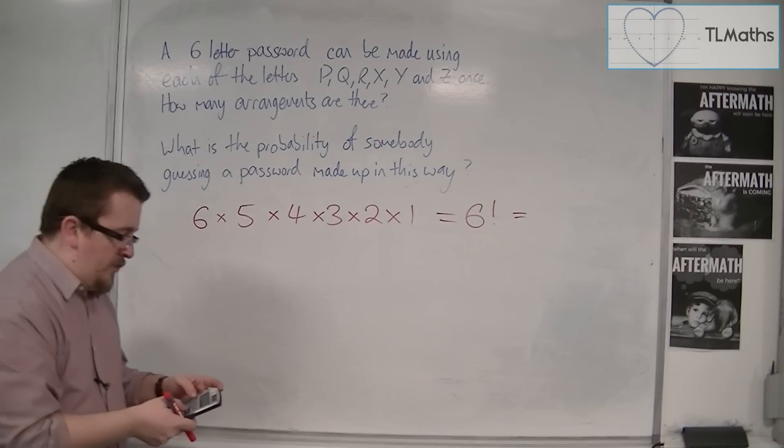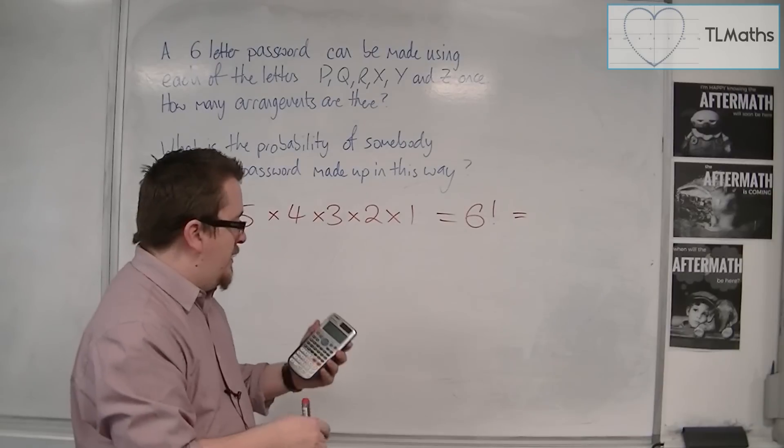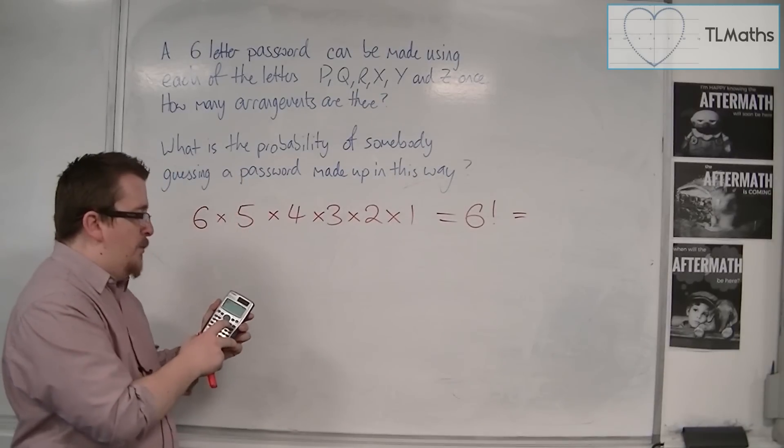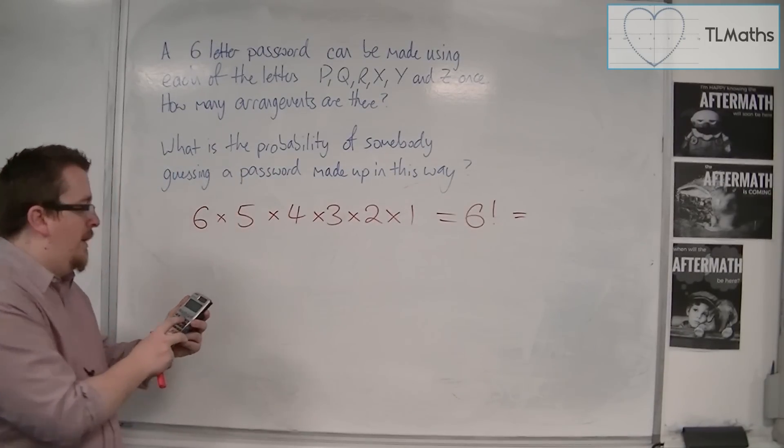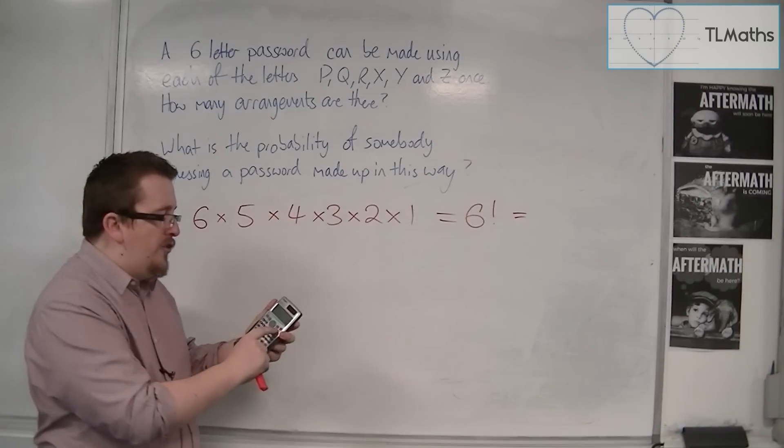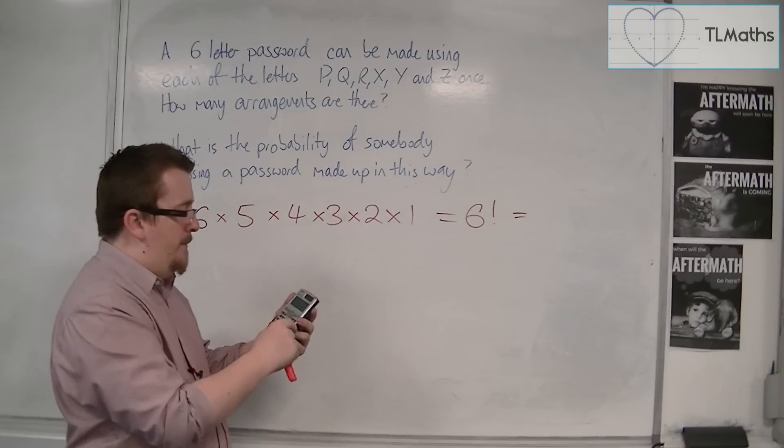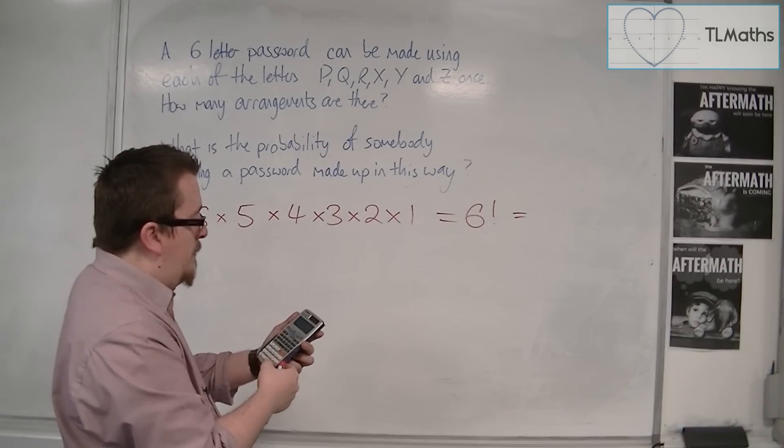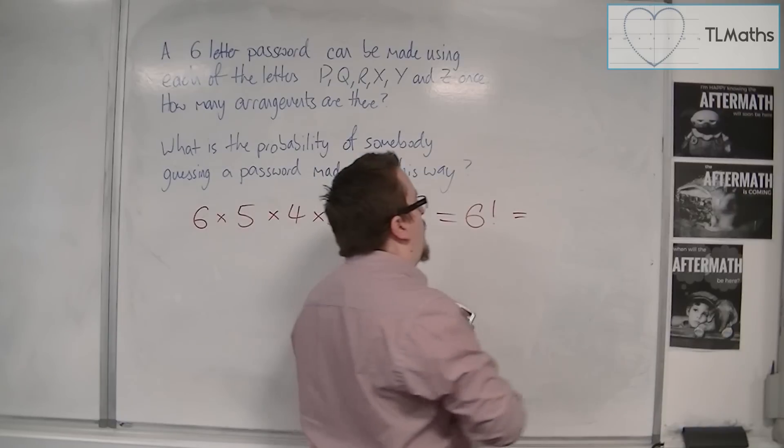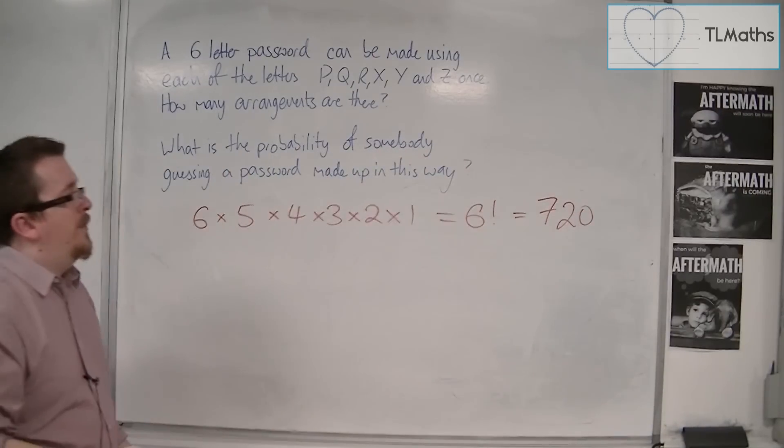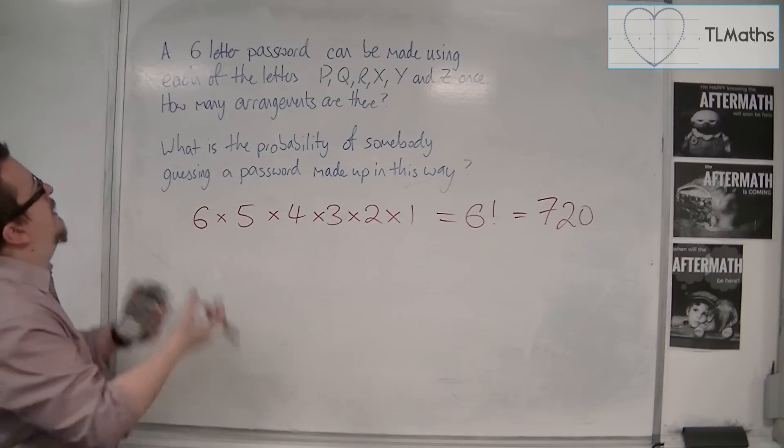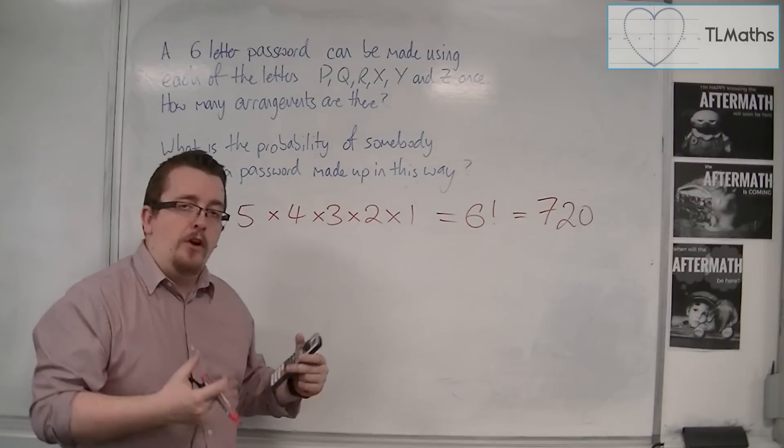You should be able to find the factorial button just above your X to the minus one button on the Casio 991 ES Plus, or on a regular Casio, just below the mode button. You've got to press shift and then that button to get it, and you should find it's 720. So there are 720 possible arrangements of this password.